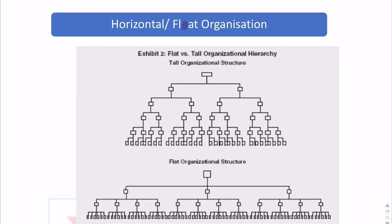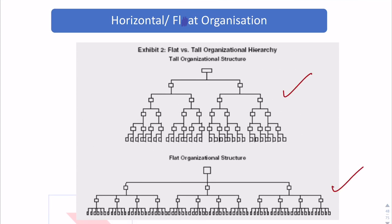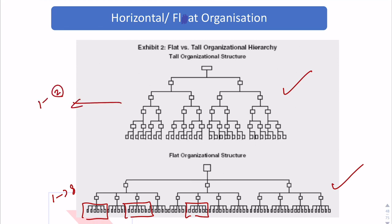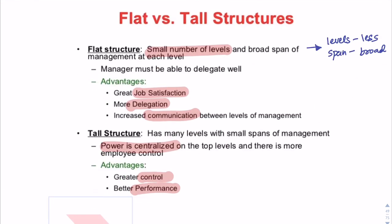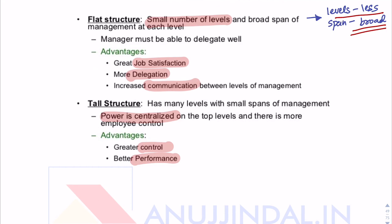Horizontal or flat organization has a very high span of control — for example, one superior with eight subordinates. A tall organization has a narrow span — one superior with only two subordinates. Research organizations typically follow flat structures because researchers do not need constant supervision from superiors, so one superior can handle many people below them. In a flat organization, levels are fewer but the span is broad; in a tall structure it is the opposite.